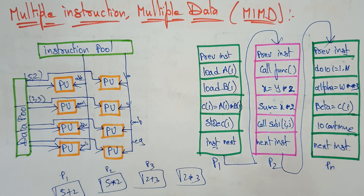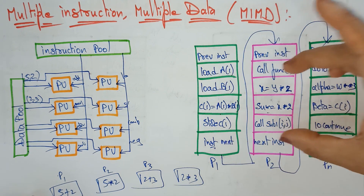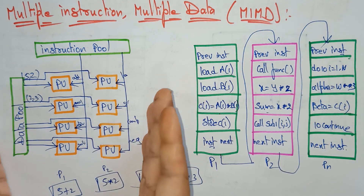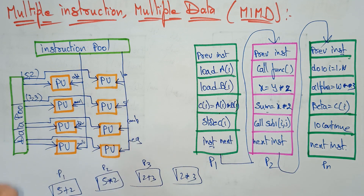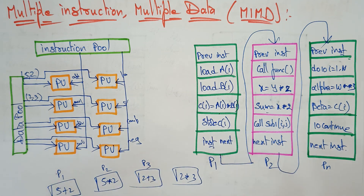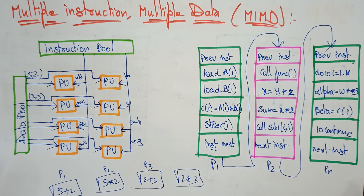This is about Flynn's classification. In exams, try to first explain what Flynn's classification taxonomy is, then explain SISD, SIMD, MIMD, and MISD. Take a program, implement the functional unit structure, substitute the values, and demonstrate how the operation works — how single instruction single data, single instruction multiple data, multiple instruction multiple data, and multiple instruction single data each function. Thank you.